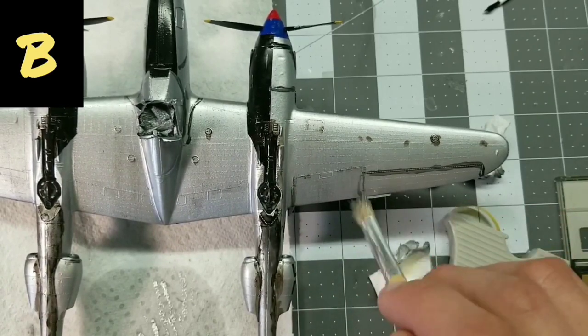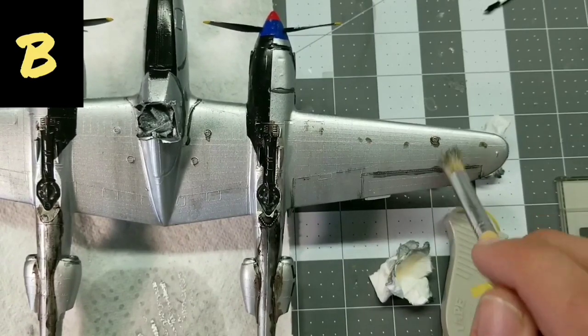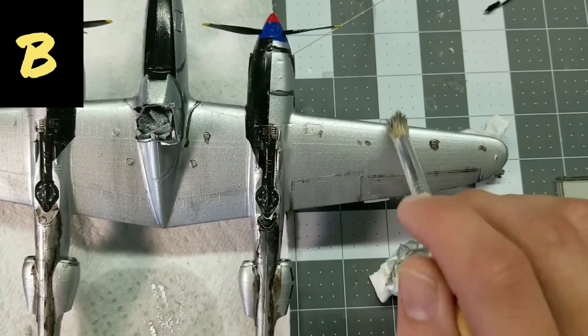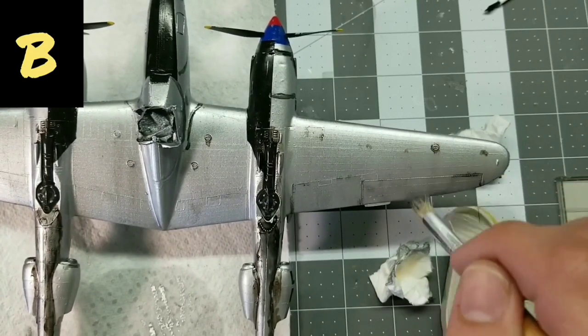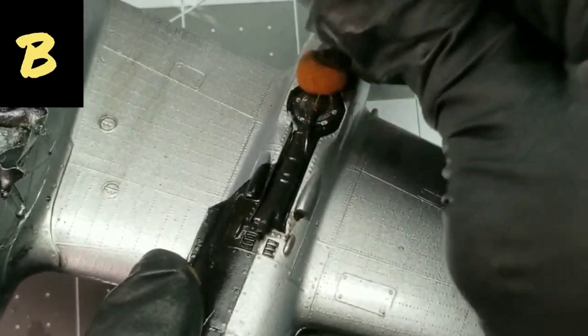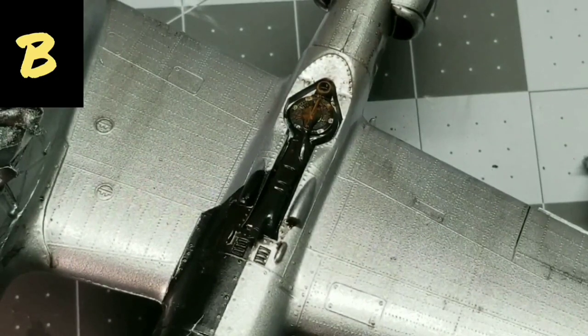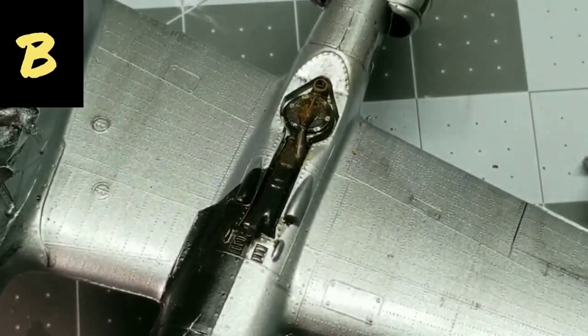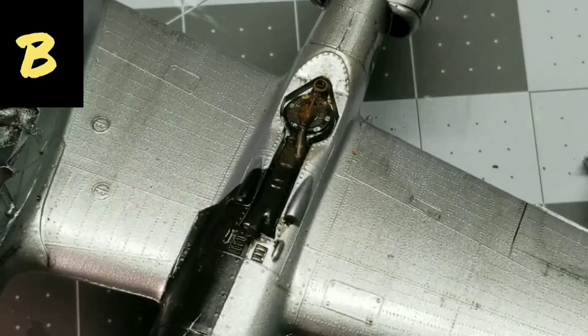So here we have some Model Master weathering techniques. This is a powder that you actually use. And actually you can use this powder as a liquid as well. You can actually mix this in with water too and apply it that way as well, if you want it to seep into cracks. But here I'm using the dry method. I kind of wanted a crisp, crusty kind of look towards that supercharger.